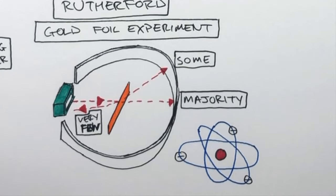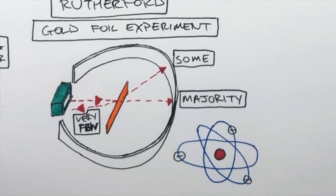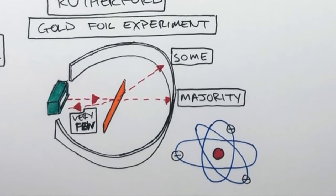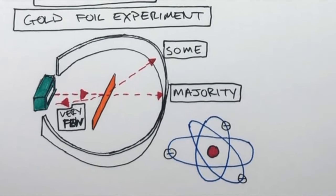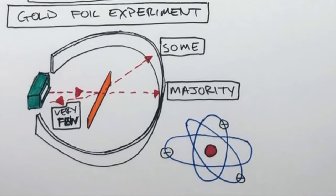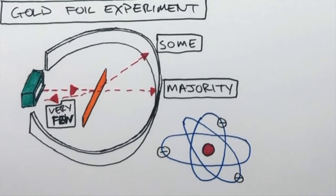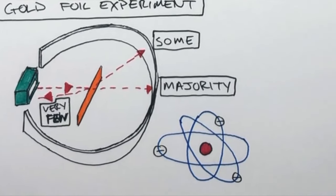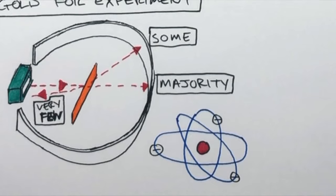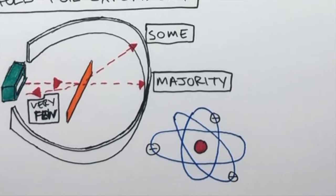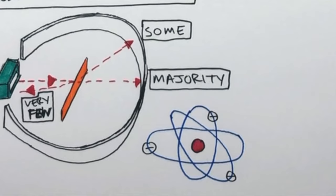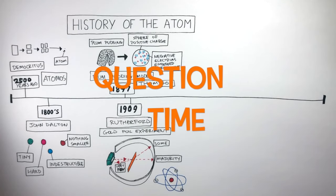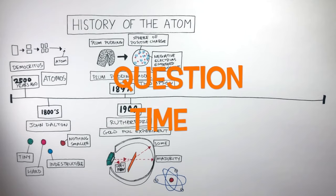Rutherford used these results to improve Thompson's plum pudding model. Rutherford said the structure of the atom consists of a very small and dense positively charged nucleus where the electrons orbit the nucleus in random paths, and in between the nuclei of atoms is empty space. It's question time. Attempt these questions to check your understanding.